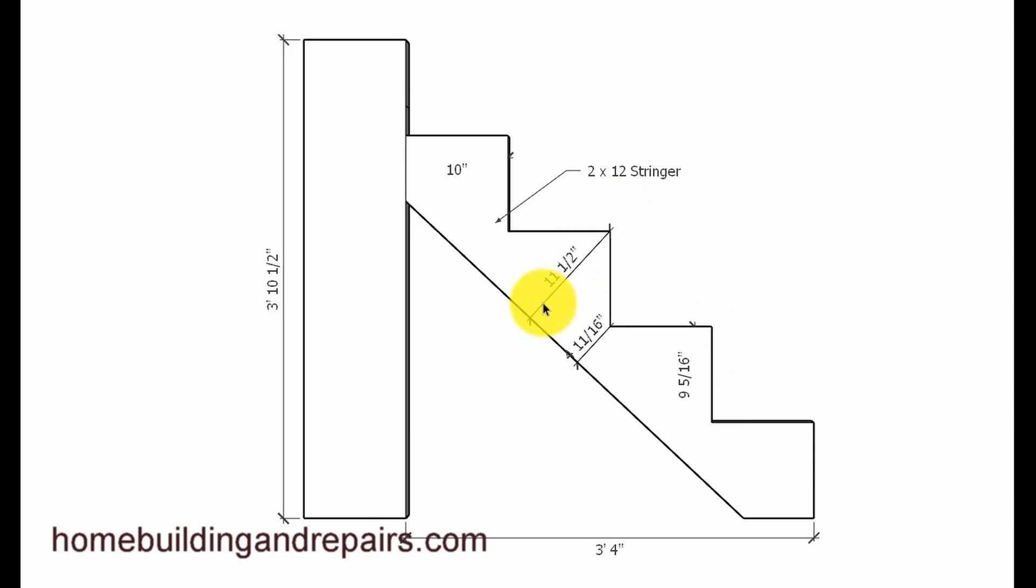So ten inch tread, nine and five sixteenths riser out of two by twelve, eleven and a half inches wide, is going to leave us with four and eleven sixteenths of an inch here. This is kind of the structural part of the stair stringer. Once we cut the notch out of it, we weaken the stringer and kind of reduce it from a two by twelve to something in between a two by four and a two by six.